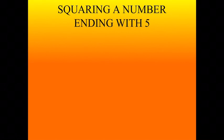Suppose we have to find 75 square. So 75 square is 75 multiply by 75. What will we do? We will multiply this 5 and this 5. So 5 into 5 is 25.